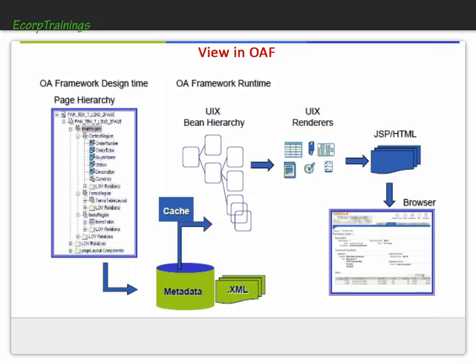Here is the detailed view of Oracle Application Framework — how the page hierarchy is, and how it looks in JDeveloper. Here you find a UIX beans hierarchy and UIX renderers. These activities are all performed by Oracle Application Framework itself. It then converts into JSP or HTML pages, which come to the browser. All the beans are controlled and rearranged by UIX renderers according to requirements specified at the time of architecture, and are compressed as a screen for the user to interact with.